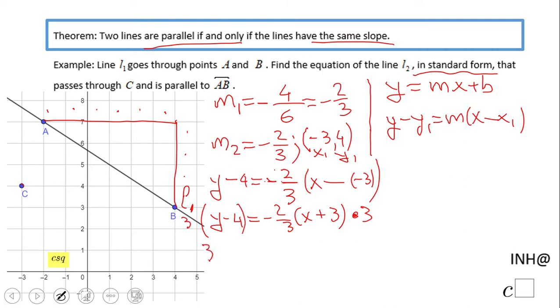Using the distributive property, I end up with 3y - 12 = -2x - 6. The standard form needs something like Ax + By = C, with x and y on the same side. So therefore, I'm going to add 2x here.